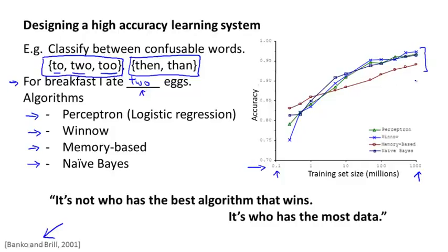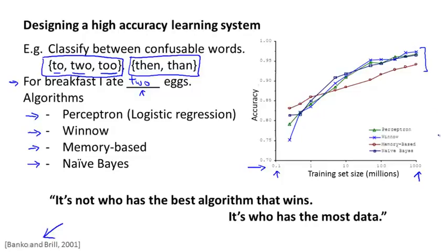So when is this true? And when is this not true? Because if we have a learning algorithm for which this is true, then getting a lot of data is often maybe the best way to ensure that we have an algorithm with very high performance rather than debating, worrying about exactly which of these algorithms to use. Let's try to lay out a set of assumptions under which having a massive training set we think will be able to help.